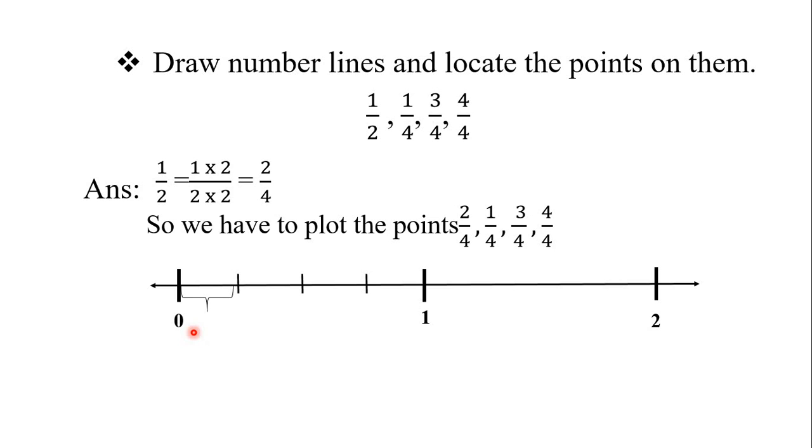Yarni zero se one ke beech me four parts, one se two ke beech me four parts. Yarni zero to one ke beech me hamen four equal partitions karne honge. Inhi partitions ko ham ye fractions karenge. So let's start. First of all I'll divide it into two and then more to two, that is four. Ab yahan par bhi, ye jo hamara first equal section ho gaya hai. Yahan tak pahunchne ke liye hame four parts karne honge according to the denominator. To first part ho gaya, second part, third part, fourth part.